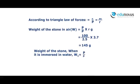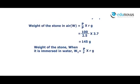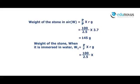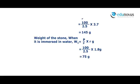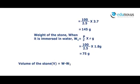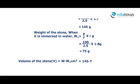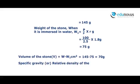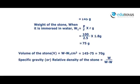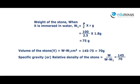W1 is equal to capital P by small p into r grams, that is equal to 100 divided by 2.5 into 1.8 grams, which is 75 grams. Volume of the stone V is equal to W minus W1 centimeter cube, that is equal to 145 minus 75, which is 70 grams. Specific gravity or relative density of the stone is equal to W divided by (W minus W1), that is equal to 145 divided by 70, which is 2.071.